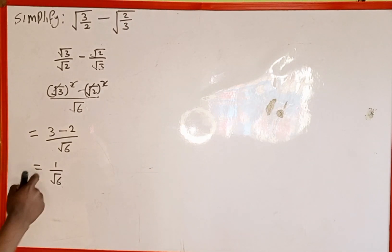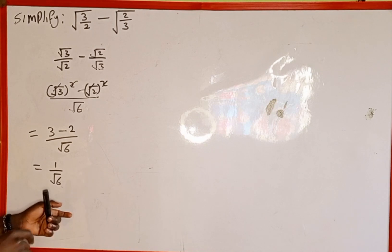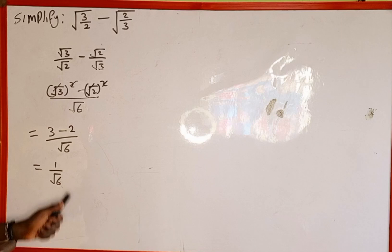We are not going to stop here. We are going to rationalize this expression. Rationalization means we are going to use this √6 in the denominator to multiply this expression by √6 over √6.